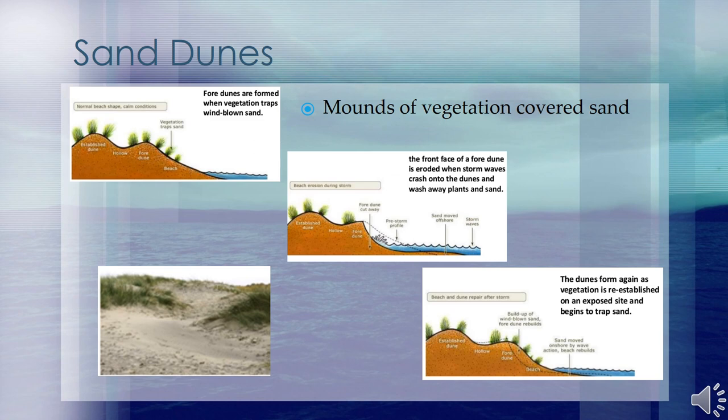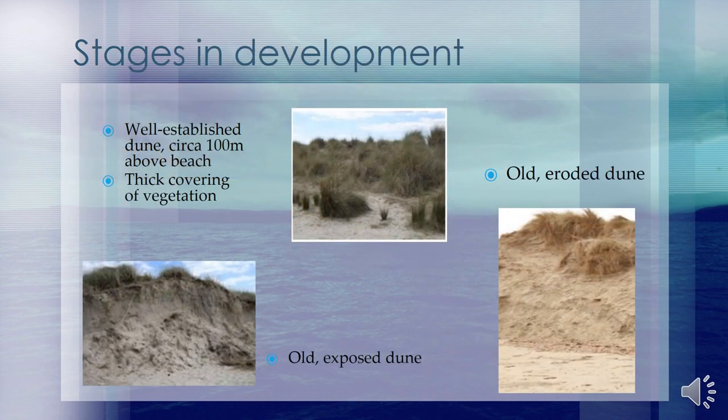As the process continues, the sand dune will increase in size and height to become a fixed or grey dune. Wind and waves can cause the sand dunes to become eroded over time. This erosion can cause the vegetation to fall away and expose the dunes, as you can see in the picture.